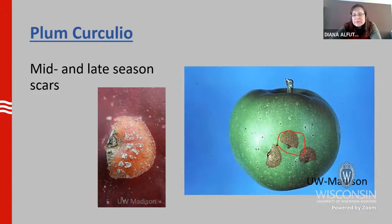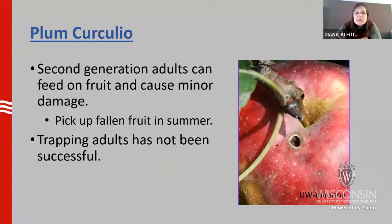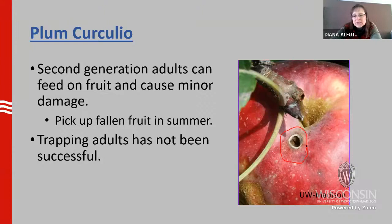The good news is that you can pretty much peel those scars away; the fruit inside is fine. So this is probably the least important of the pests we're going to talk about today. Plum curculio will also have a second generation — those fruit that fall on the ground, those larvae will continue to develop, pupate, and then fly around later in the year and actually make holes in the fruit. So you want to make sure you pick up any fallen fruit in the summer to prevent that second generation. Trapping these adults has not really been successful, so you may not even see them until you see the damage.